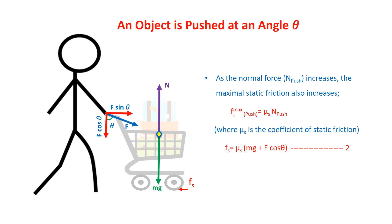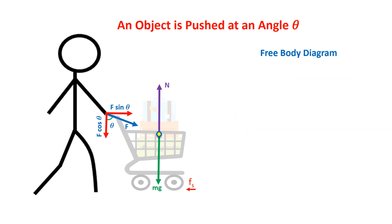As the normal force N push increases, the maximal static friction also increases. F max s push equals mu s times N push, where mu s is the coefficient of static friction. Therefore, F s equals mu s times (Mg plus F cos theta). In the free body diagram, the object is taken as a point. This shows the downward force, the normal reaction force, the force applied on the object, and the frictional force.